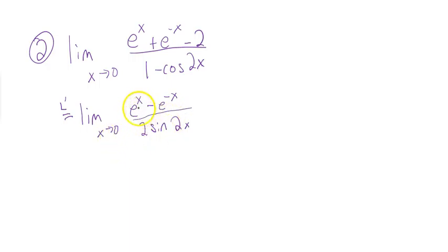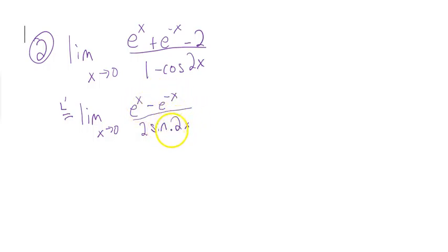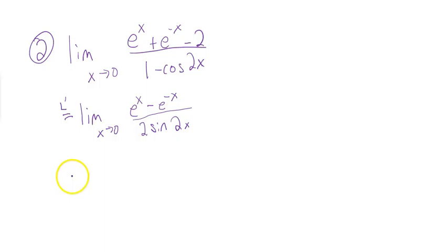Now I'm going to plug in 0 again. Anything to the 0 power is 1, so on top I have 1 minus 1. The sine of 0 is 0, so on the bottom I have 2 times 0. Again I'm getting a 0 over 0 indeterminate form, so I can repeat L'Hôpital's rule — I can do it again.